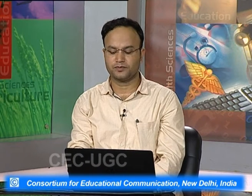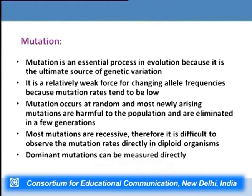Most mutations are recessive — only when those alleles are present in two copies will they express their phenotype. Therefore it is difficult to observe mutation rate directly in diploid organisms because they contain two copies of each allele. If the mutation is recessive it will show its effect only when two copies of the recessive allele are present. Dominant mutations also occur though their frequency is very low, and when such mutations occur their rate can be measured directly.